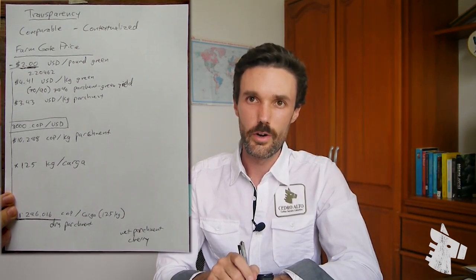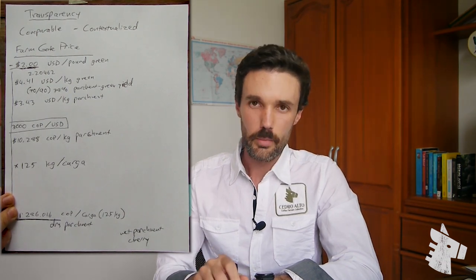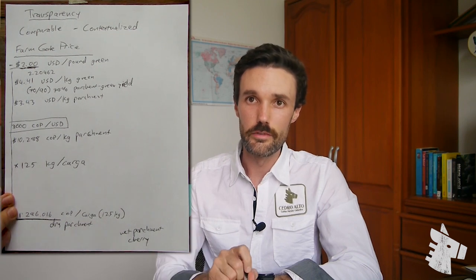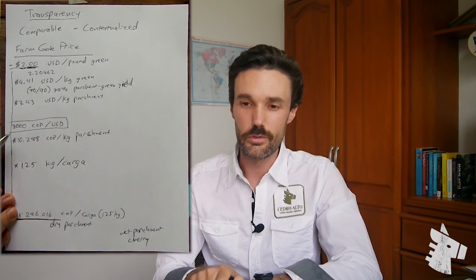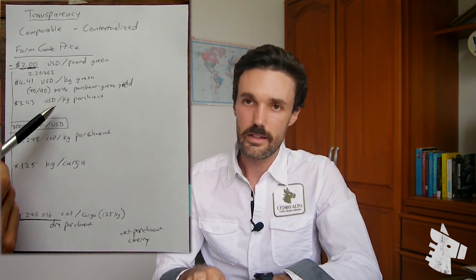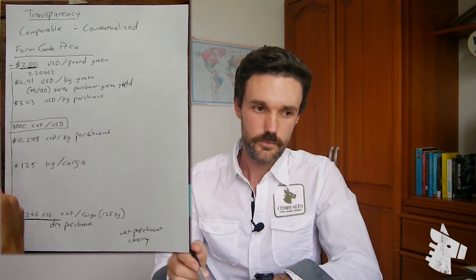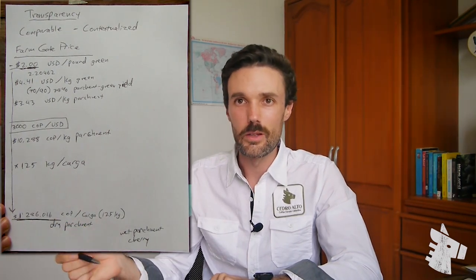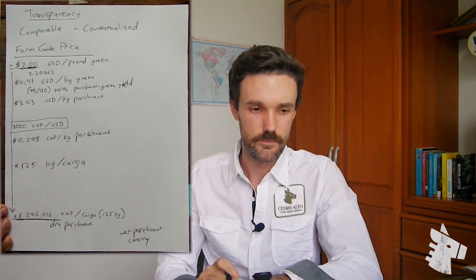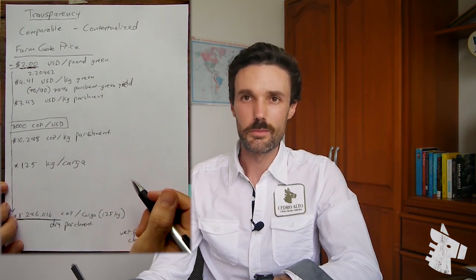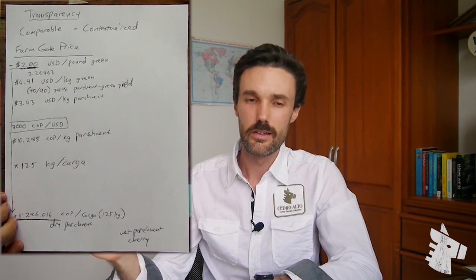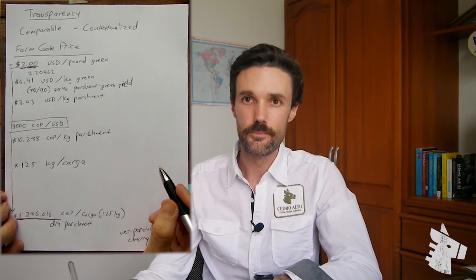So the next time someone quotes you how many dollars were paid to a farmer at the farm gate per pound of green coffee, make sure you ask them how they calculated that derivative number. What exchange rate was used? What parchment-to-green coffee yield was used? Was that yield then compensated to the farmer? Or maybe even ask them how many Colombian pesos were paid per carga — because that number is not going to change. Now you have some context as to what a US dollar per pound green coffee farm gate price means in Colombia.